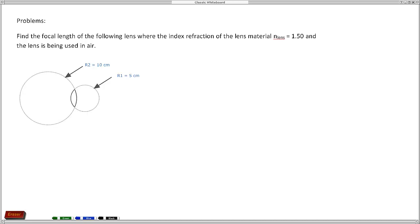We're going to work a problem involving the lens maker formula. The problem is to find the focal length of the following lens where the index of refraction of the lens material is 1.5 and the lens is being used in air.